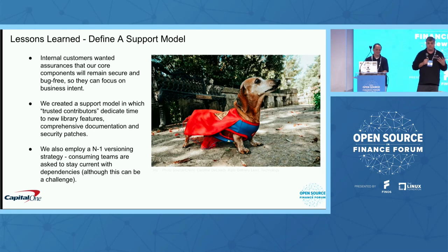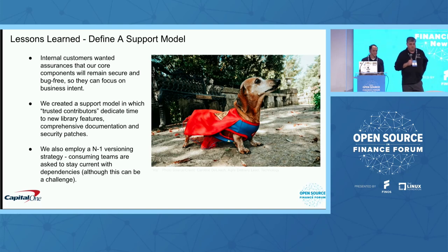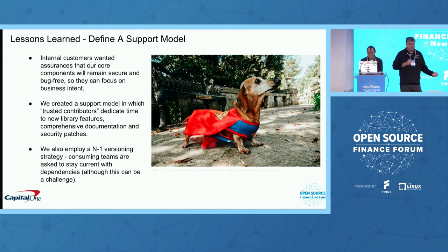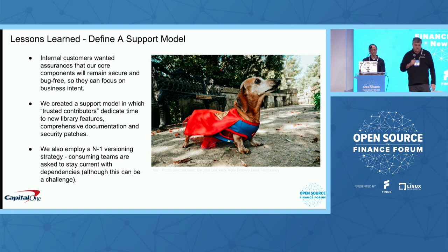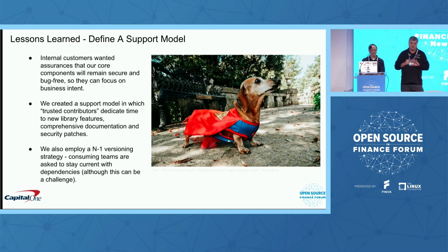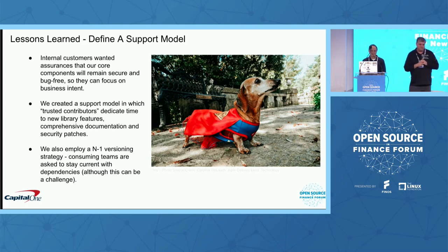We also learned that we had to define a clear support model. Internal customers wanted to know that their core components would remain secure and bug-free so they could focus on their business intent. We created a support model in which trusted contributors dedicate time to new library features with comprehensive documentation, which is required, and security patches. We have an N-minus-1 versioning strategy where consuming teams are asked to stay current with their dependencies. In the fifth iteration of this system, we are completely backwards compatible all the time. We learned that early when we had people doing mass dependency updates. We now use a lot of automated tooling to handle our dependencies, which has reduced a lot of developer toil.